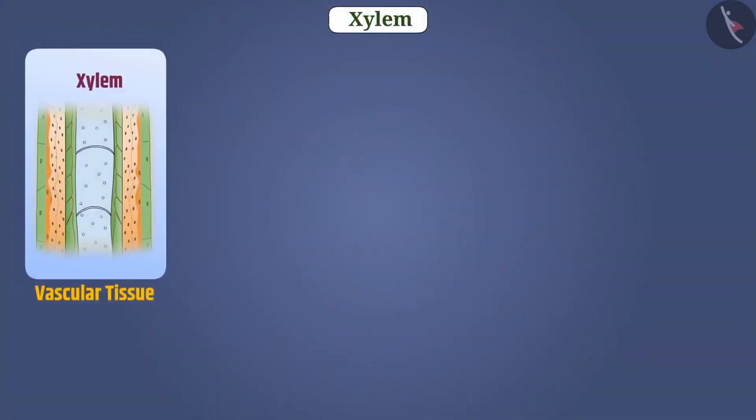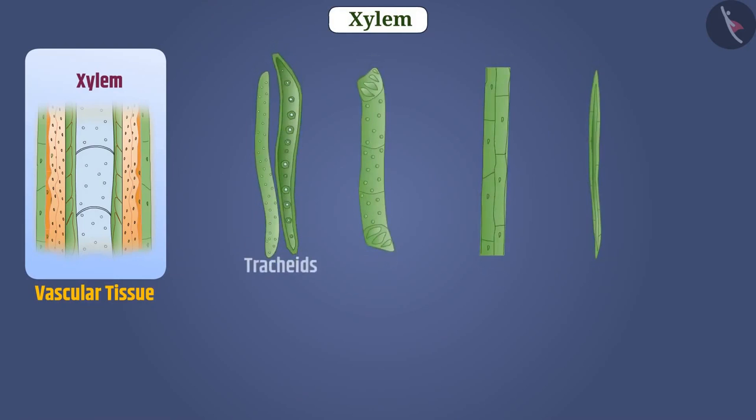Let's talk about vascular tissue xylem. Xylem is made up of four types of cells: xylem tracheids, vessels, xylem parenchyma, and xylem fiber together form xylem tissue.